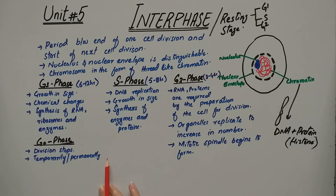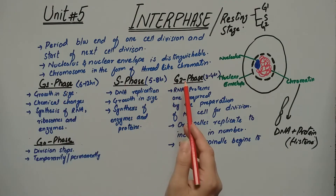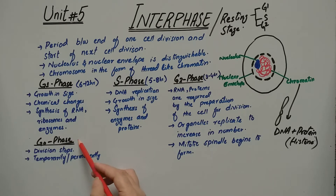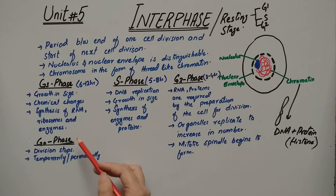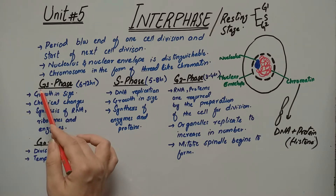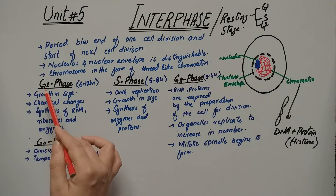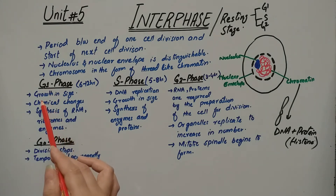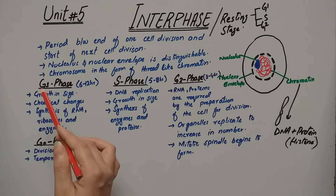During interphase there are different events occurring in different sub-phases. There are G1-phase, S-phase, and G2-phase. These are the standard sub-phases. But in exceptional cases there is also a G0-phase. G stands for gap — so G1 is the gap 1 phase.